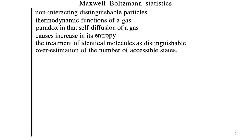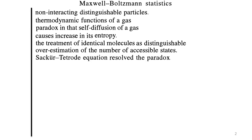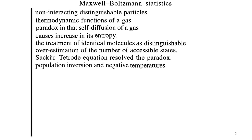The distinguishable character of the molecules led to over-estimation of the number of accessible states, hence leading to the paradox. We then came across the Sackur-Tetrode equation, which resolved the Gibbs paradox by assuming the particles to actually be indistinguishable. We also came across the concept of population inversion and negative temperatures in that unit.